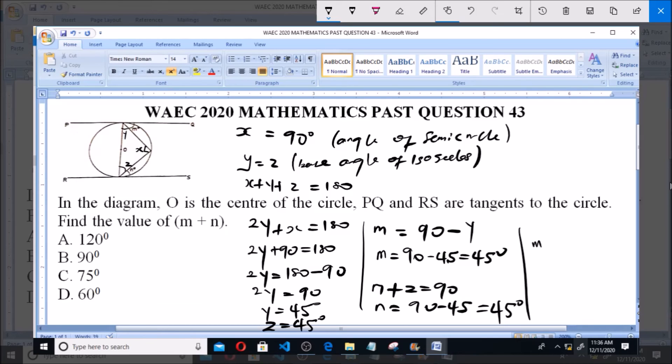So M plus N equals 45 plus 45, and that equals 90 degrees. Option B is the right answer.